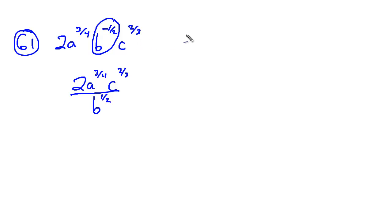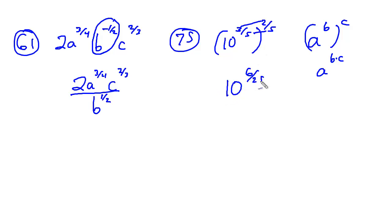When we get to problem number 75 on the same page, we're going to take a look at 10 to the 3 fifths power raised to the 2 fifths power. Now from our previous problem we learned that a to the b raised to the c power is just a to the b times c, we're going to do the same thing here. Top times top, bottom times bottom. This becomes 10 to the 6 twenty-fifths.